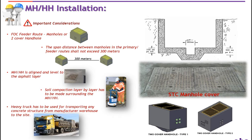Number three: where ducts are terminated into the body of mini manhole or handhole, the main duct bundles need to be 15 up to 25 cm inside the mini manhole or handhole body. Also, all ducts shall have no sharp edges. Number four: the contractor shall cap all duct entries to stop the entry of foreign materials between the time of the duct installation and installation of STC cables.